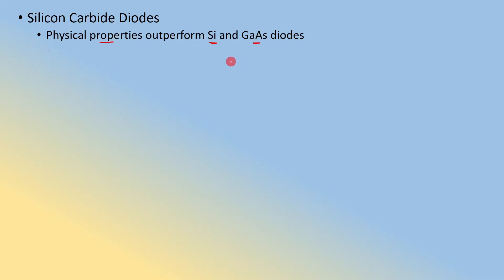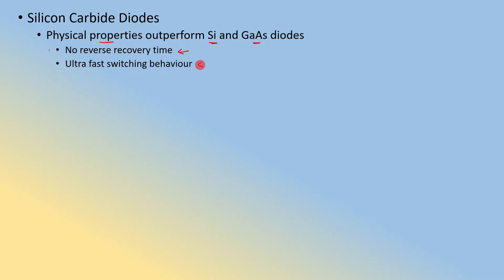The next type is the silicon carbide diode. Silicon carbide is a material — for example, a Schottky diode can also be made using silicon carbide. Silicon carbide has very superior features; its physical properties outperform silicon and gallium arsenide diodes. Typically, silicon carbide diodes have an extremely low reverse recovery time, on the order of picoseconds — practically zero reverse recovery time. This means they have ultra-fast switching behavior and no reverse recovery losses.